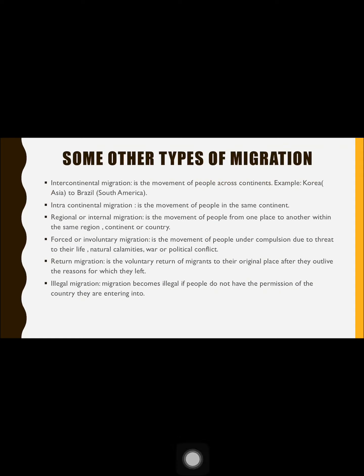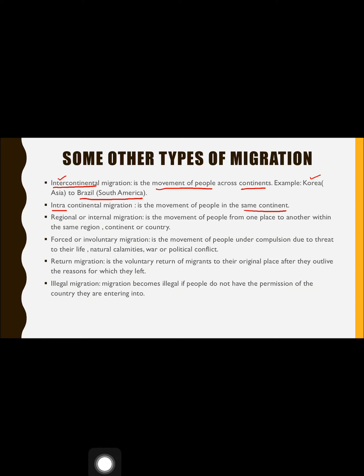There are more types of migration. Intercontinental migration is the movement of people from one continent to another — for example, from Korea in Asia to Brazil in South America. Intracontinental migration occurs within the same continent. Regional or internal migration is the movement within the same country — for example, people moving from Mumbai to Delhi.